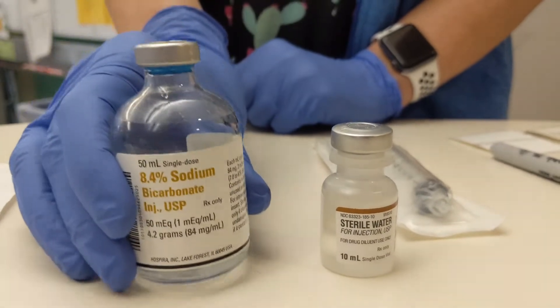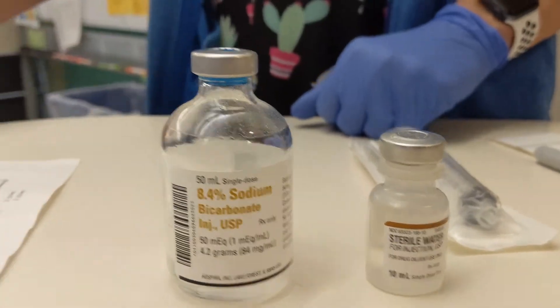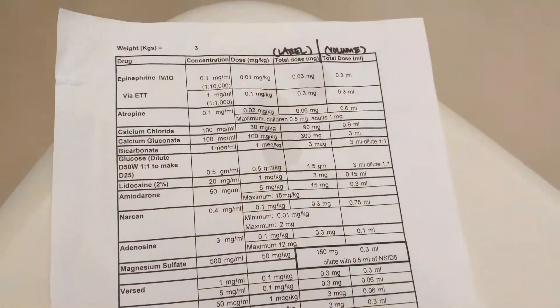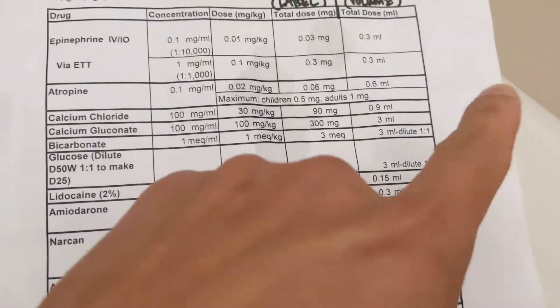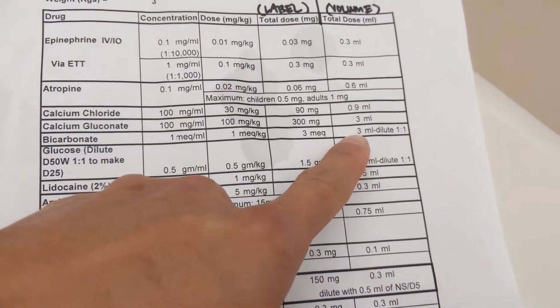1 ml to 1 ml, so 1 to 1. So if our patient's 3 kilos, we're going to be drawing up 3 mL equivalents of sodium bicarb. So we're also going to need 3 mL of sterile water.